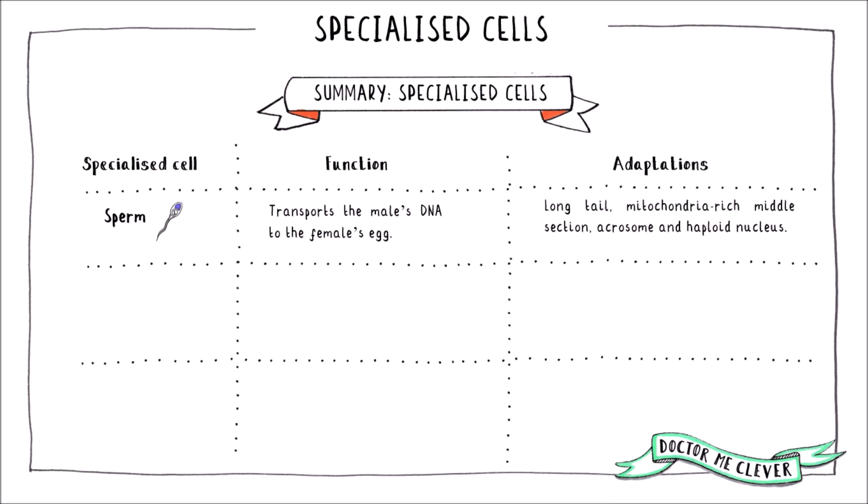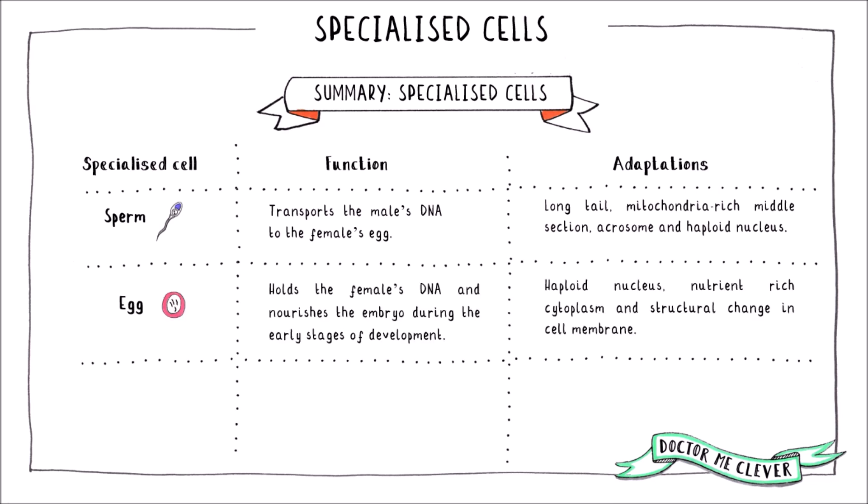To summarise the three cell types: the sperm cell is specialised to transport the male's DNA to the female's egg — it has an acrosome in the streamlined head, a long tail, a mitochondria-rich middle section and a haploid nucleus. The egg cell holds the female's DNA and nourishes the embryo as it develops — it has a haploid nucleus, a nutrient-rich cytoplasm and a special cell membrane that changes its structure after fertilisation. Finally, ciliated epithelial cells have hair-like cilia, making them ideal for moving substances.